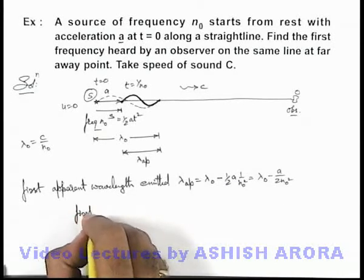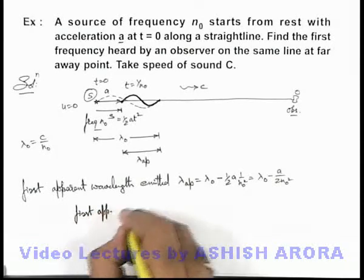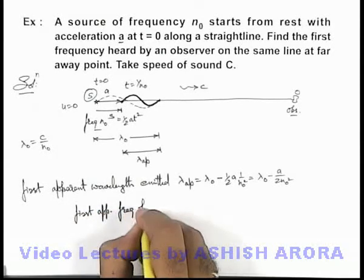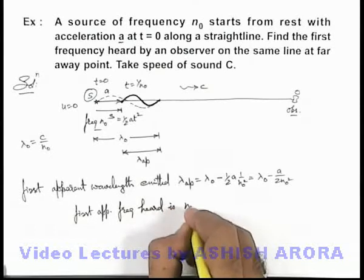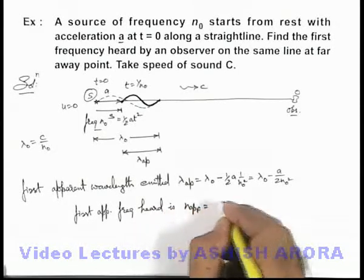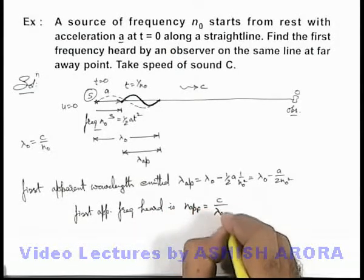We can write first apparent frequency heard is, and apparent first can be written as c by λ_apparent because this is the first wavelength which is receiving observer.